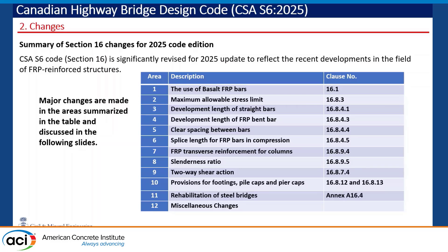Whereas in the case of FRP, 0.002 strain is very small. It keeps going until about 0.02 — 2% strain. Until that point, it keeps providing lateral stiffness which is initially lower than steel but later on much higher than steel.